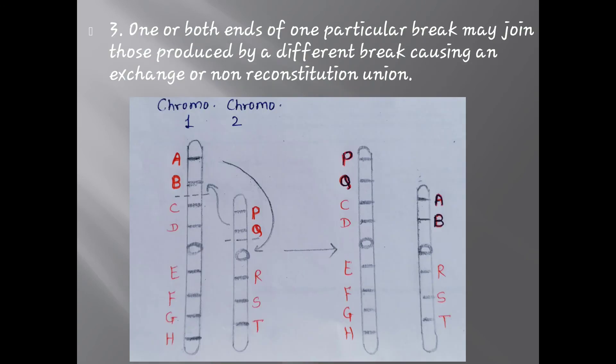Thirdly, one or both ends of one particular break may join those produced by a different break, causing an exchange or non-reconstitution union. Here the breaks are occurring in two different non-homologous chromosomes: the first chromosome has a break between segment B and C, and the second chromosome has a break between segment Q and the centromere. The broken segments of the non-homologous chromosomes will be exchanged, resulting in non-reconstitution union.